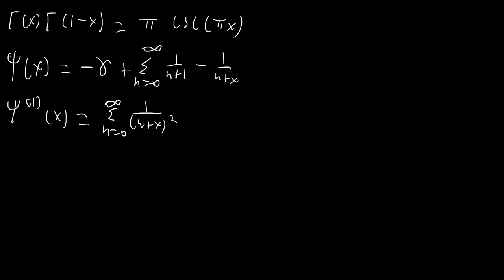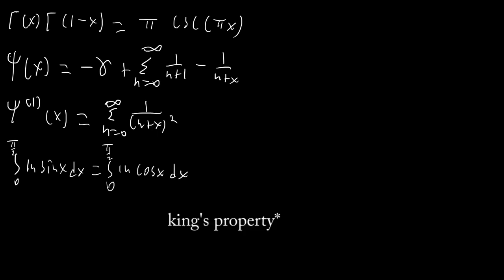The other major thing we're going to need is the integral from 0 to π/2 of ln(sin x) dx, and we're going to solve this super quick. This is the same as the integral from 0 to π/2 of ln(cos x) dx, just using King's theorem with u = π/2 − x. We'll call this value j and solve for it.